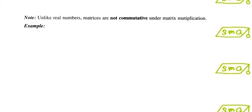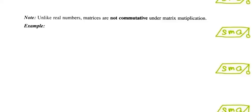Note that unlike real numbers, matrices are not commutative under matrix multiplication. For example, the product of AB is different from the product of BA, which is shown here.